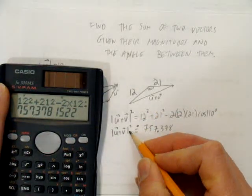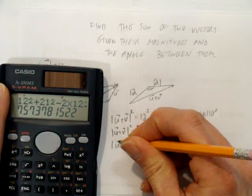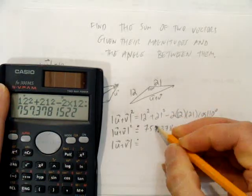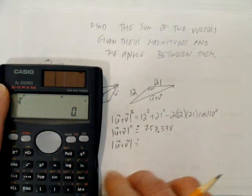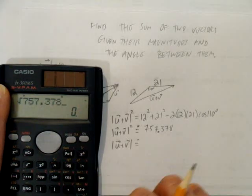And this is the magnitude of the vector, that sum vector, squared. So the last thing I'm going to do to find the actual magnitude is take the square root. Put a rounding dot because I'm going to square root this number. What's the square root of 757.378?